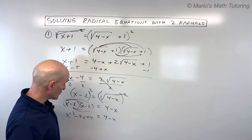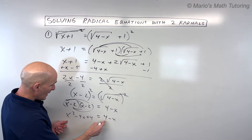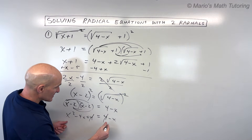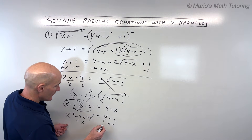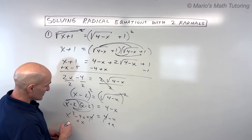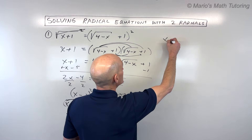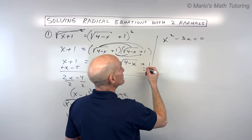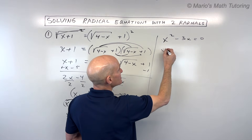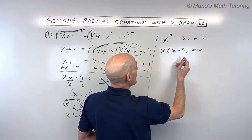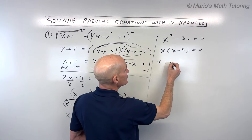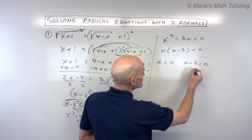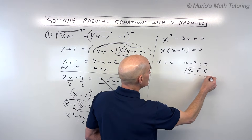Now all of our square roots are gone, so it should be easier to solve. Subtracting four from both sides and adding x to both sides gives us x squared minus three x equals zero. We factor by taking out the greatest common factor x, then set each factor equal to zero using the zero product property. Solving gives us x equals three and x equals zero.